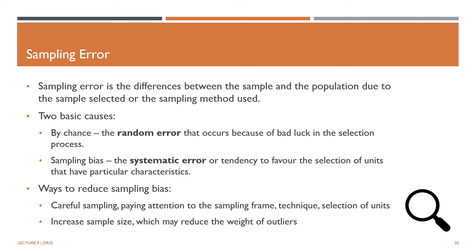Sampling bias is usually the result of a poor sampling plan. The most notable is the bias of non-response, when some units have no chance of appearing in the sample. One way to reduce sampling bias is to sample carefully, paying attention to the suitability or reliability of the sampling frame, appropriateness of the sampling technique, and selection of units to study. Alternatively, one may increase the sample size, which reduces the weight of outliers. However, there is a trade-off between sample size and cost.